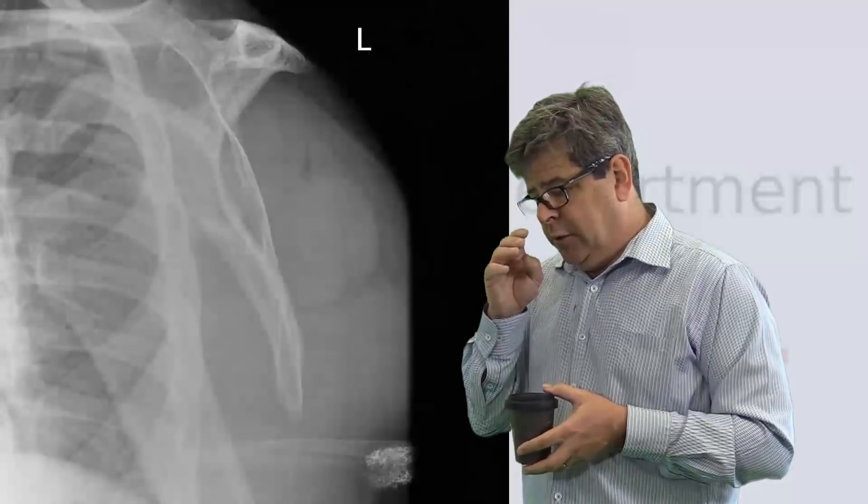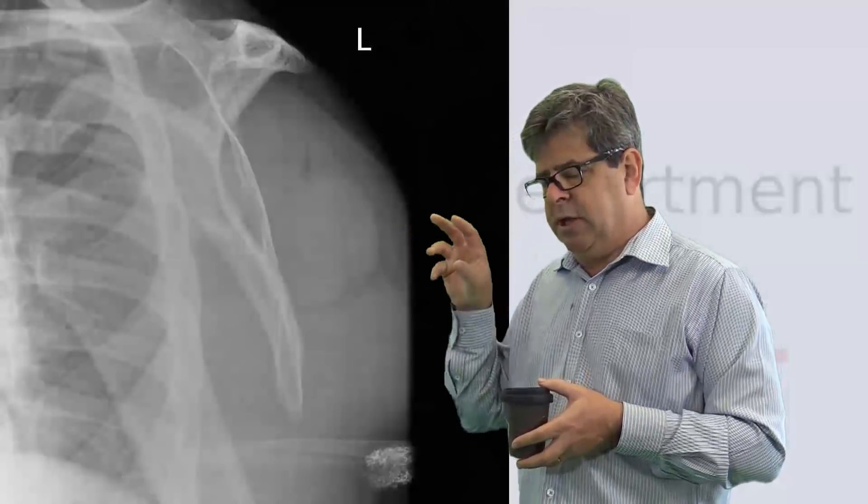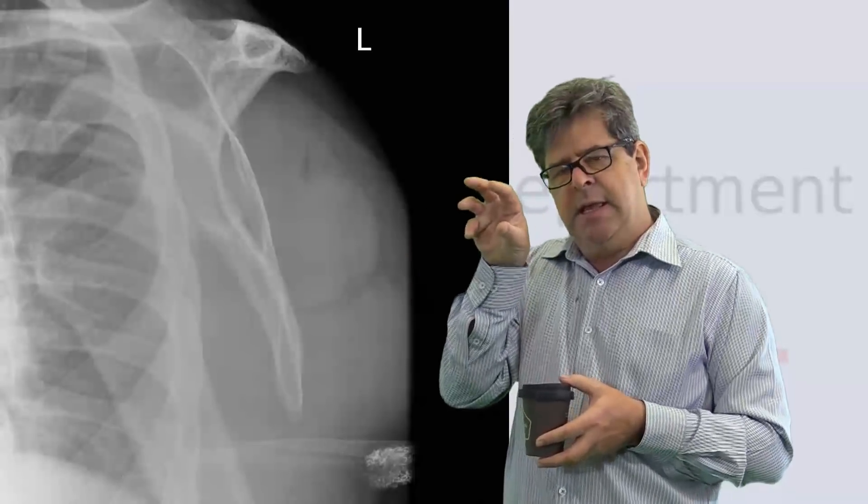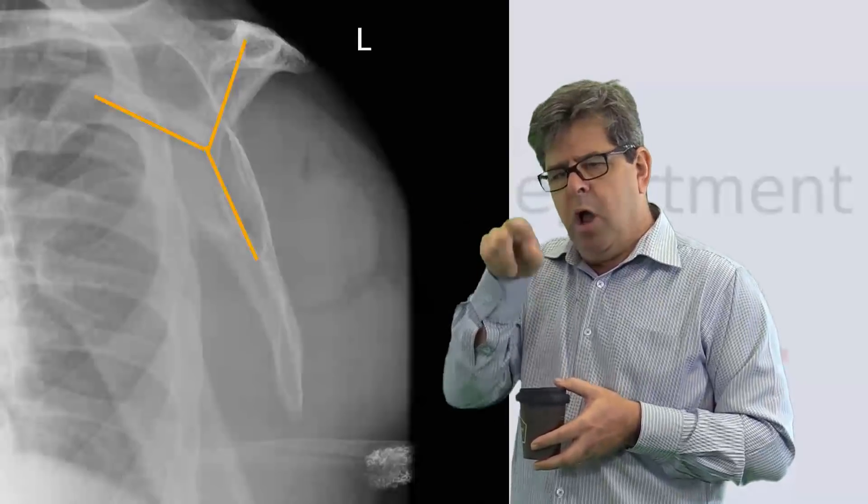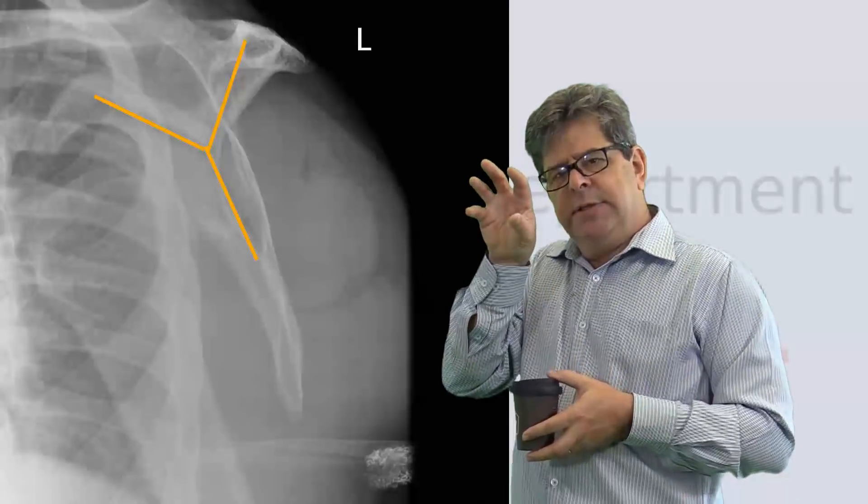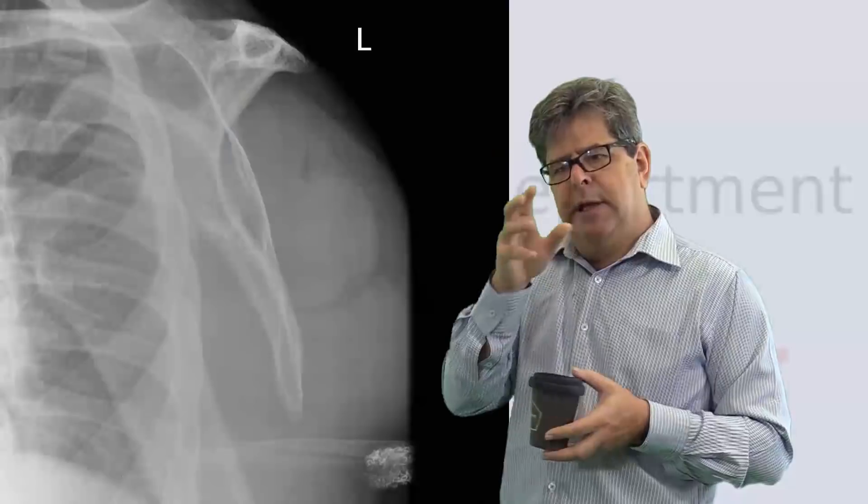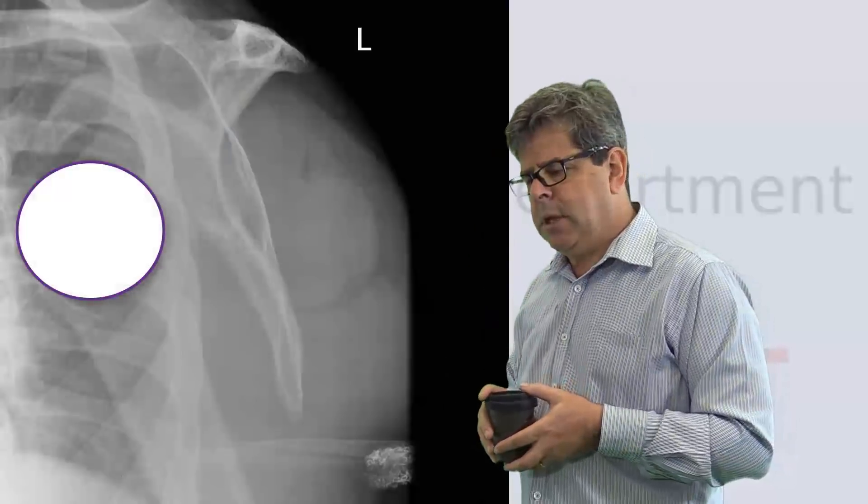While we're on x-rays, you can also get a trans scapular view, and you can see where the head sits. The head should sit inside the glenoid in this sort of Y or Mercedes sign. If it's sitting anterior, it's an anterior dislocation.